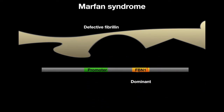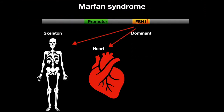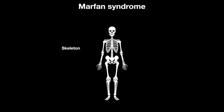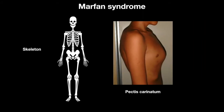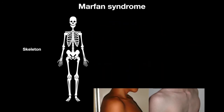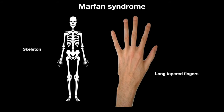It is a dominant allele and commonly affects the skeleton, heart, and eyes. The skeleton generally becomes tall, with long extremities. It may have pectus carinatum or pectus excavatum. The joints are hypermobile. The fingers and toes are long and tapered — more scientifically, arachnodactyly.